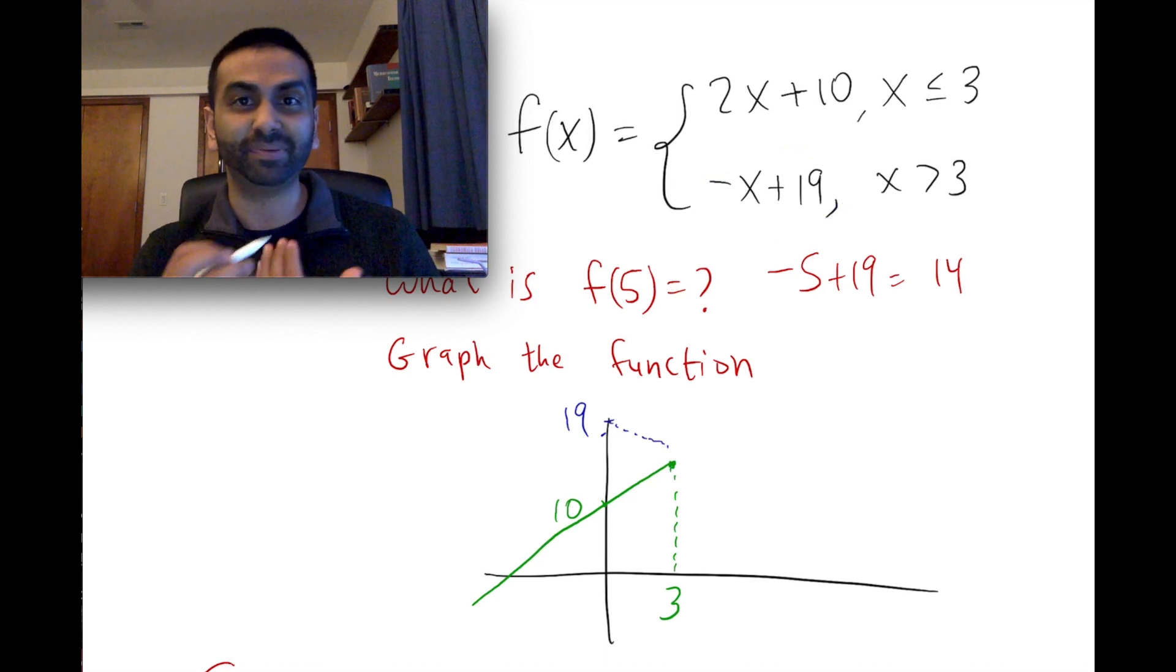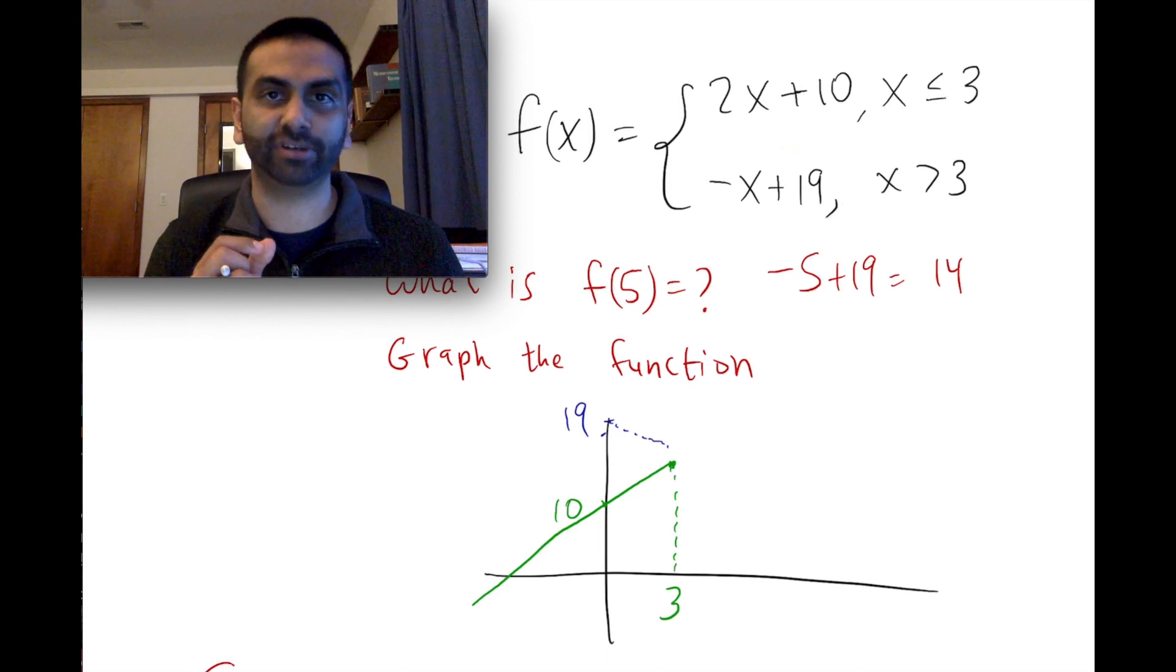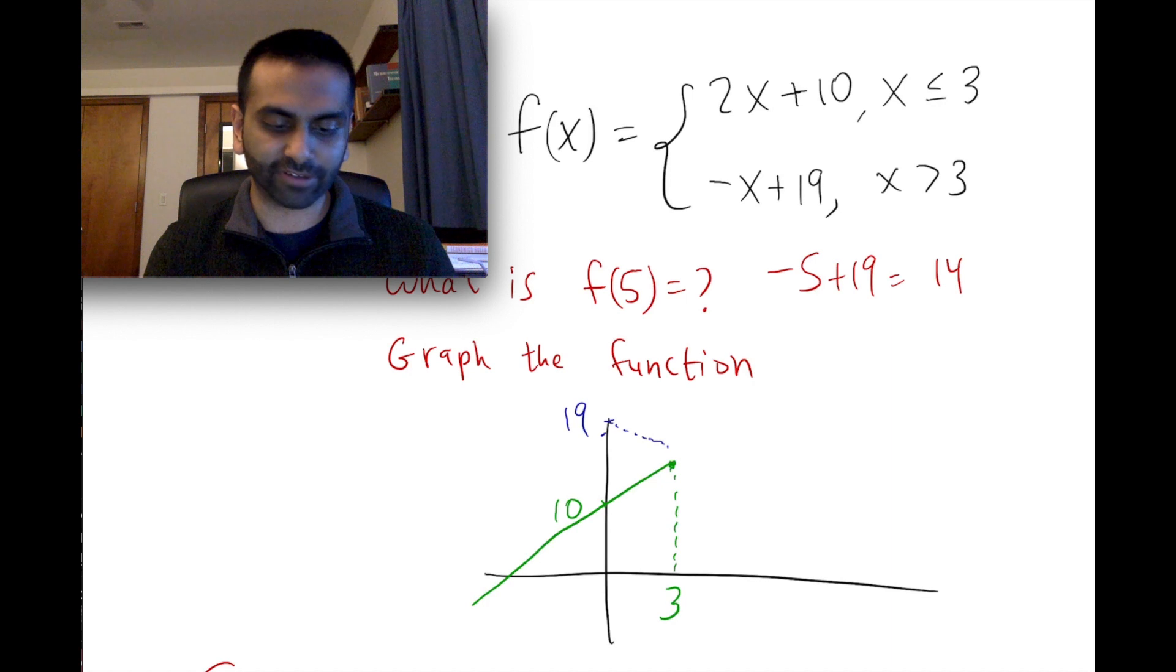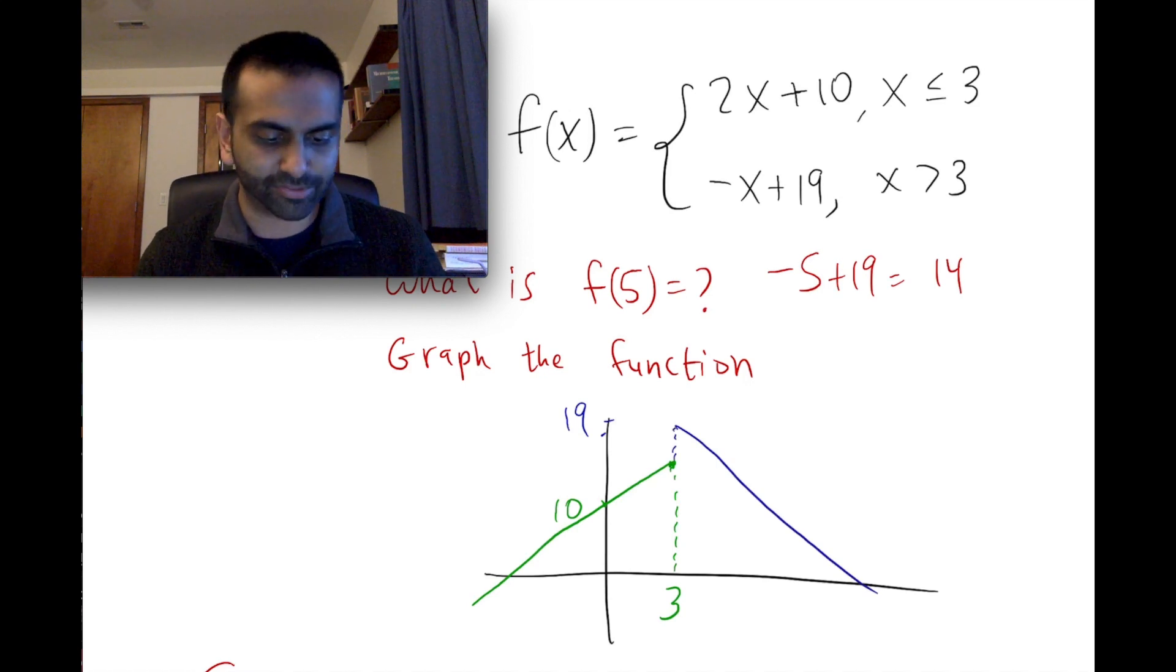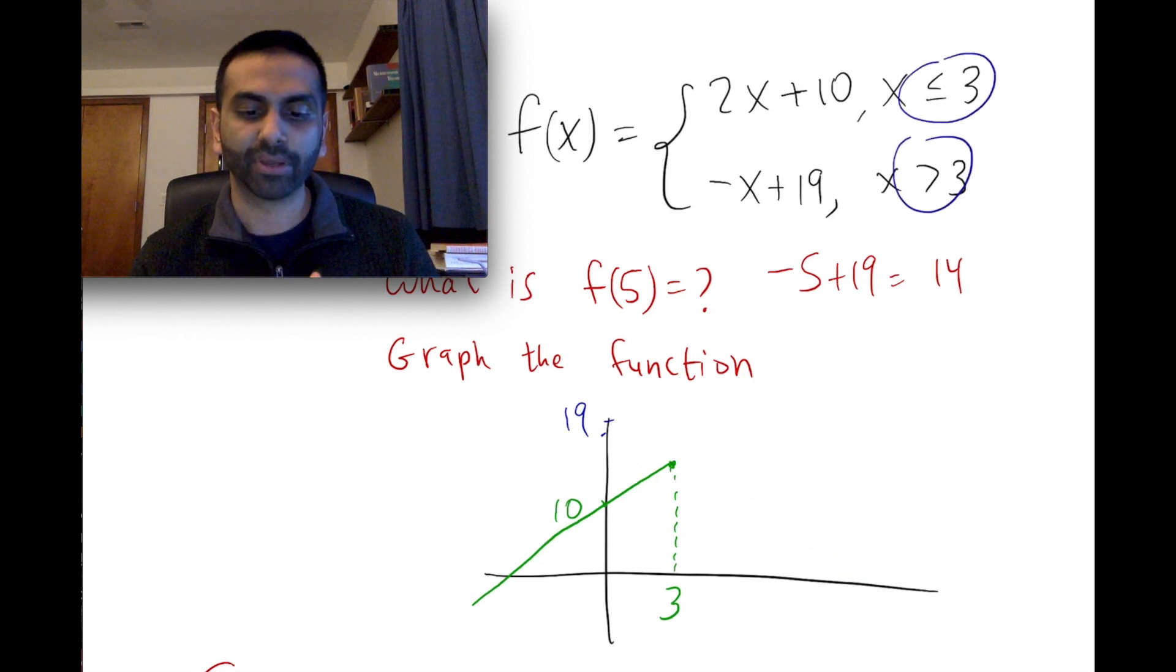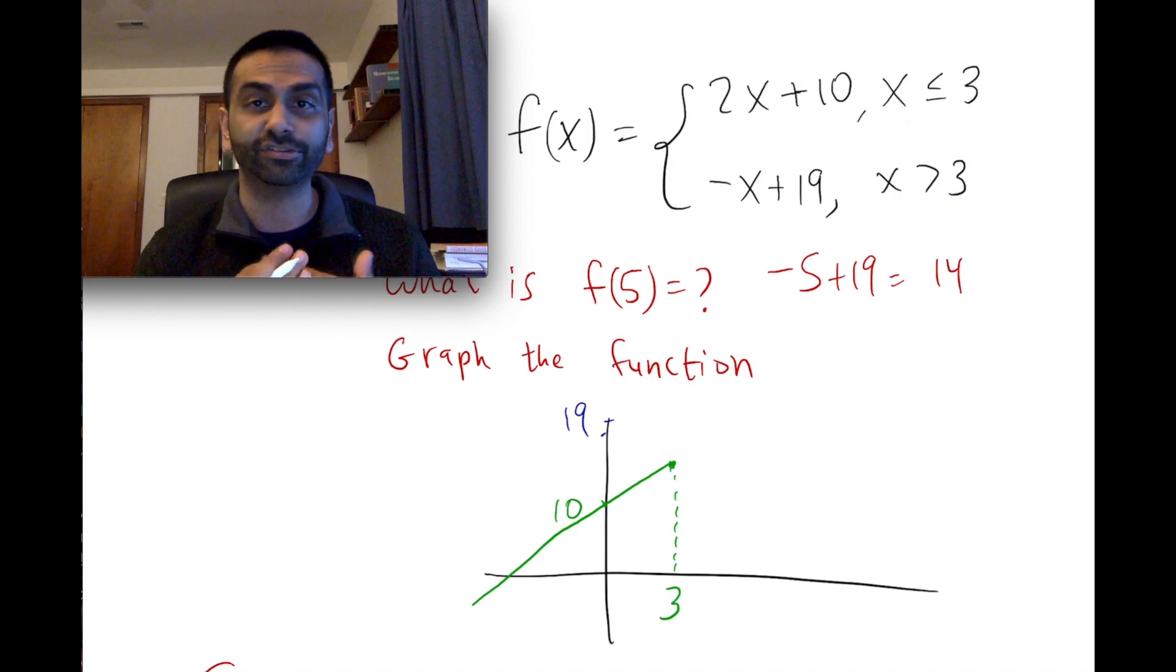So essentially to see if this piecewise function is continuous or not, meaning here for example, this is a negative slope, so we don't know, just looking at it, it might look like this, in which case there's some discontinuity there. At 3, it jumps abruptly from whatever it is here to whatever it is here. So to see if it's continuous or not, we really just want to see when x is 3, at the turning point, what is each of these functions doing?